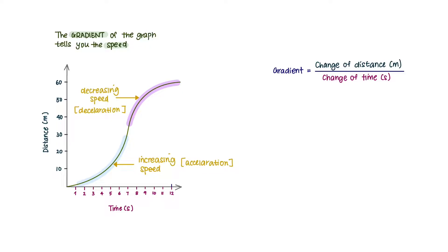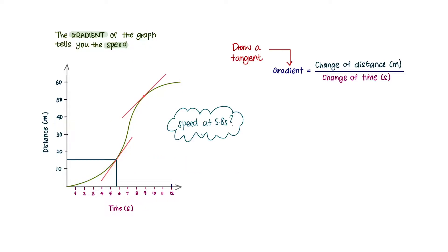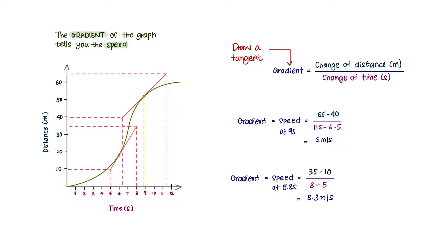To calculate the speed at a certain time, you have to first draw a tangent like this. Take two points and you will obtain your speed.